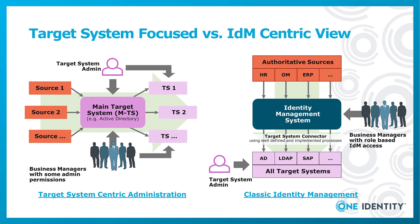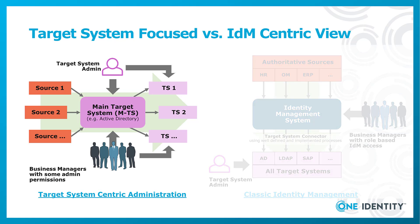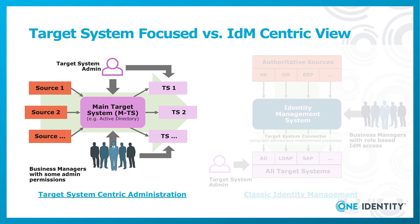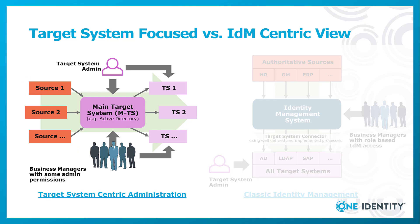In the classic world of user administration you typically can find two scenarios. One scenario — the one on the left side — is what we call a target system centric administration. That means there is one big target system, the important one, very often an Active Directory, and this target system gets from some other sources, lists or other systems like an HR system, a little bit of information so that users can be created.